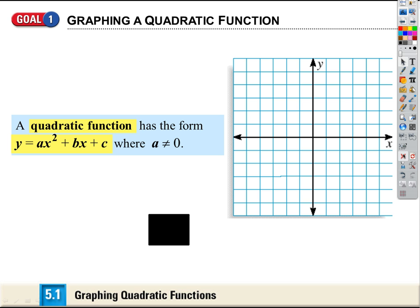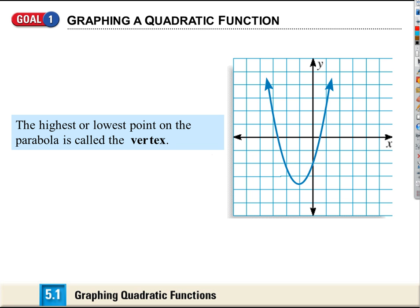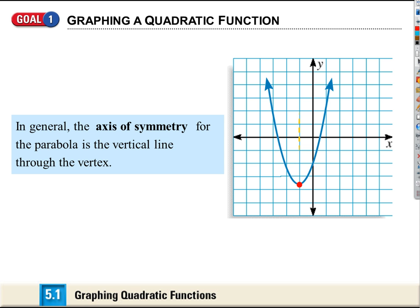Having x's that are squared does something really important to what these functions look like. If we look at the graph of a quadratic, it always looks like a parabola — it's a U-shaped graph, so we're not straight anymore. The highest or lowest point on a parabola is called the vertex. If it opens up, the vertex is the minimum; if it opens down, the vertex is the maximum. The axis of symmetry is just the vertical line through the vertex.